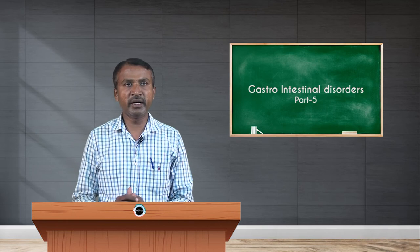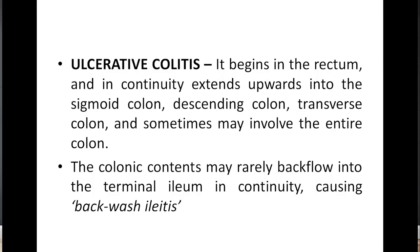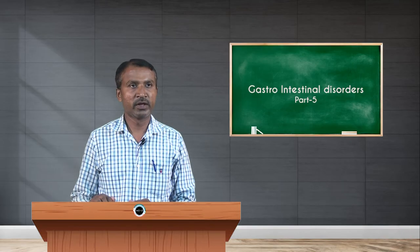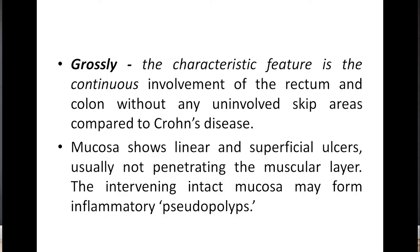Ulcerative colitis begins in the rectum and in continuity extends into the sigmoid colon, descending colon, transverse colon, and sometimes may involve the entire colon. Colonic contents may rarely backflow into the terminal ileum, causing backwash ileitis. Grossly, the characteristic feature is continuous involvement of the rectum and colon without any uninvolved skip areas, unlike Crohn's disease. The mucosa shows linear and superficial ulcers, usually not penetrating the muscular layer, and the intervening intact mucosa may form inflammatory pseudopolyps.